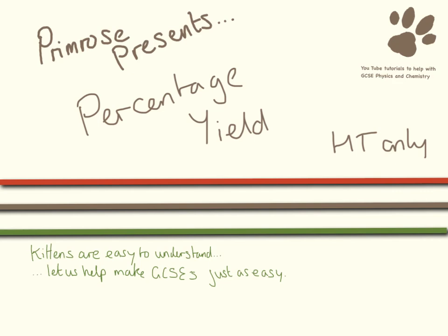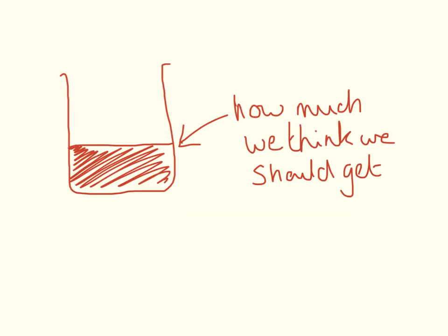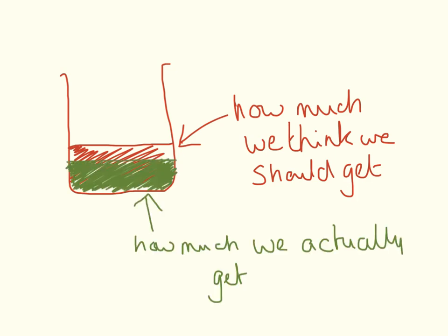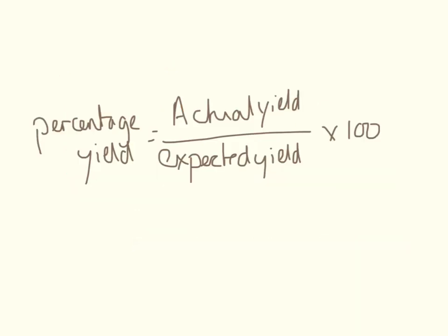Hello and welcome to this video where we're going to be looking at how to calculate percentage yield. When we think about percentage yields, we need to do two things: we need to know how much of a product we think we should get, and we need to know how much of a product we actually get. This is going to be less than the amount that we think we should get. The equation is: percentage yield equals actual yield divided by expected yield times 100.